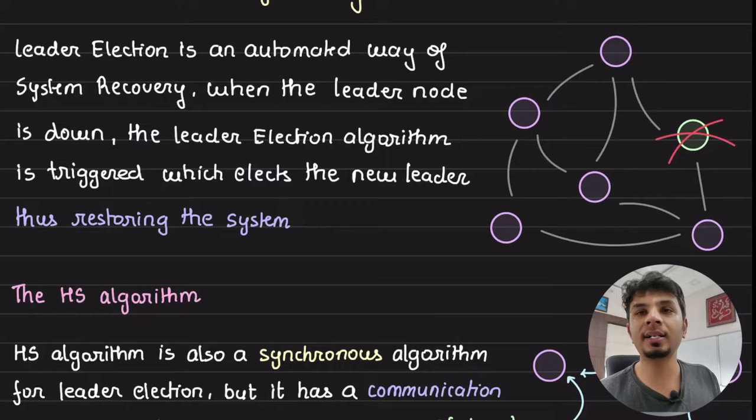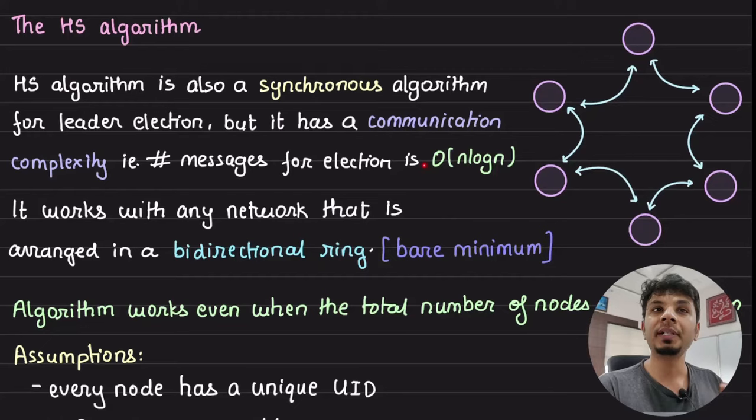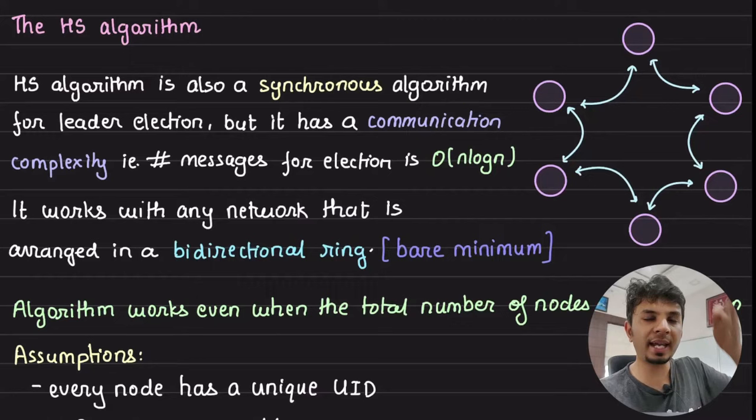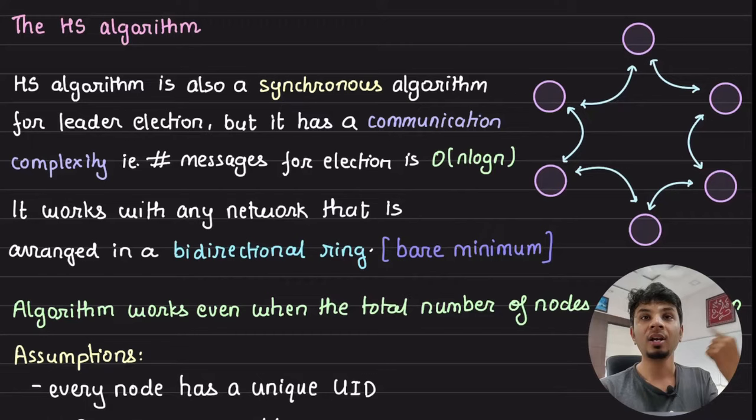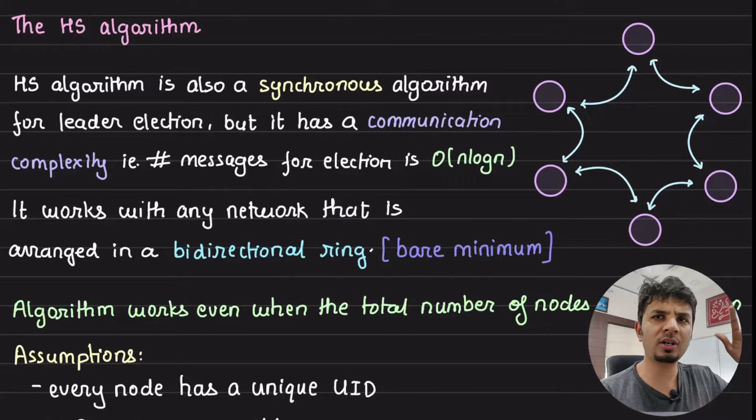The algorithm we'll be discussing is called the HS algorithm, which is also a synchronous algorithm. This means every node participating in the election knows when the election is starting, when we are moving to the next round, and when the election has ended. They are all operating synchronously when the election process starts; apart from that, they could operate on their own.